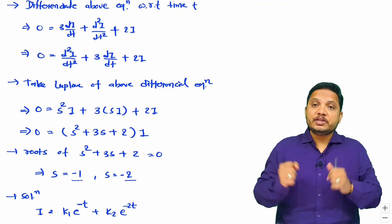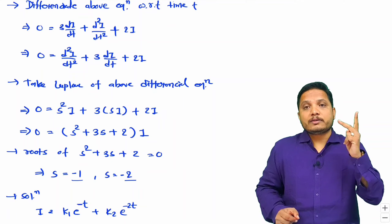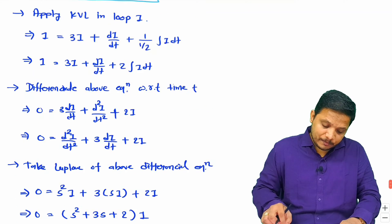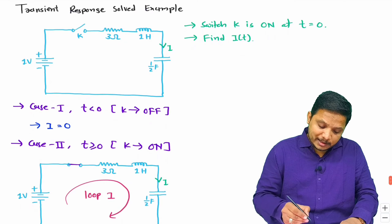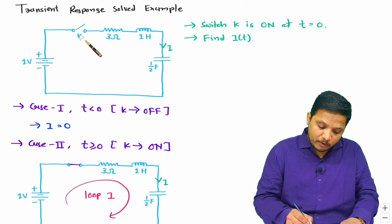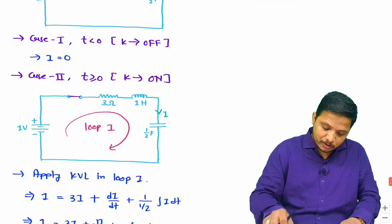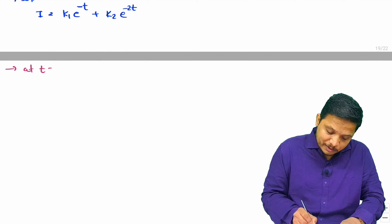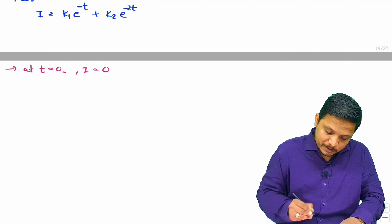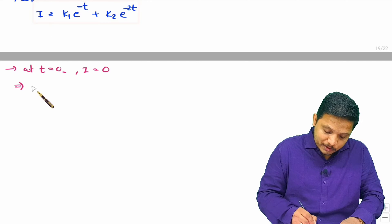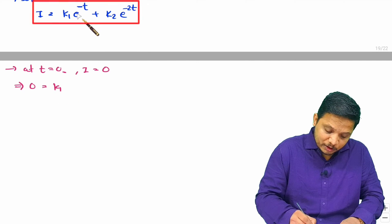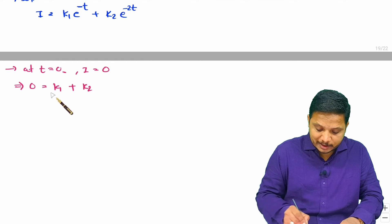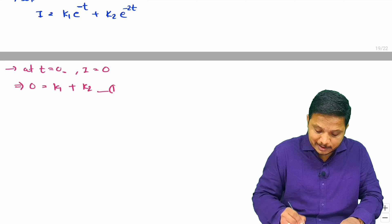We have two constants, k1 and k2, so we need two zero initial conditions. The first is at t equals zero minus, when the switch is off. Since the switch is off, current i equals zero. Substituting into the solution: 0 = k1·e^0 + k2·e^0, which gives k1 + k2 = 0. This is equation one.